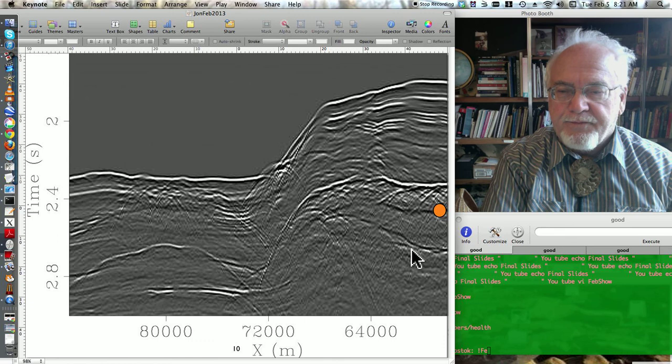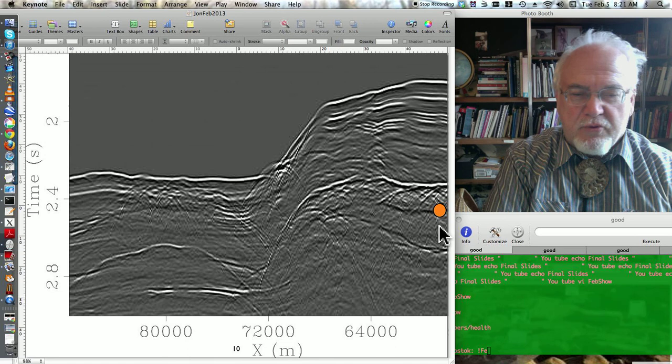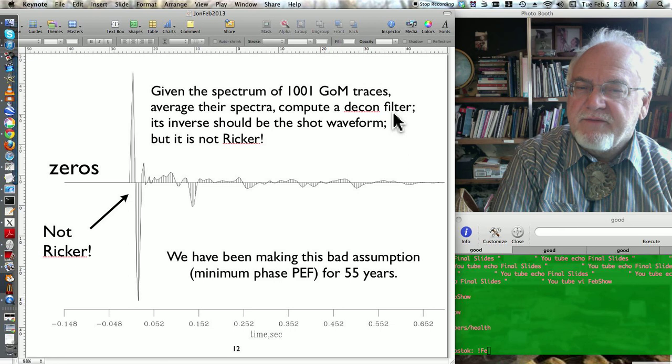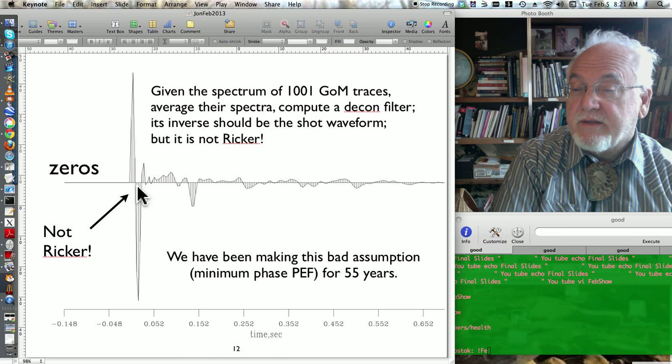Oh, I forgot to mention this orange dot is a bubble. So I took a thousand Gulf of Mexico traces from a line, and I computed their spectra. I averaged the spectra, I computed a decon filter for the average spectra. I took its inverse, and I got what should be the shot waveform, but it's not, as you can see, it's not a regular wavelet. But this third lobe is really small.